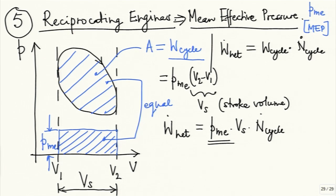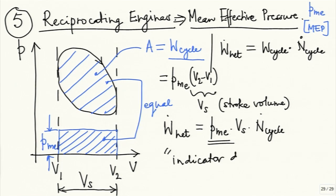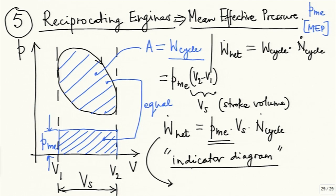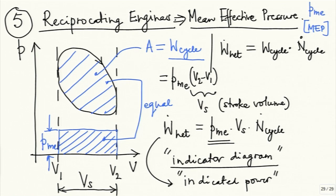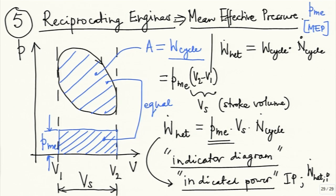For typical IC engines, if properly instrumented, it is possible to measure and plot such p-V diagrams. Earlier we used mechanical devices; now we have electronic sensors and the diagram is shown on a computer screen. Such a diagram when plotted is known as an indicator diagram, and the power calculated using this diagram is known as indicated power, denoted IP or W-dot-net-I, where I indicates it comes from the indicator diagram.